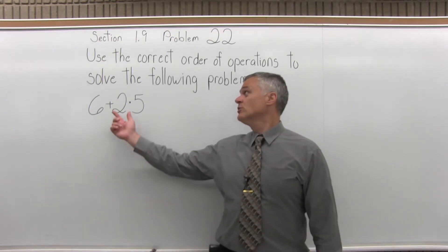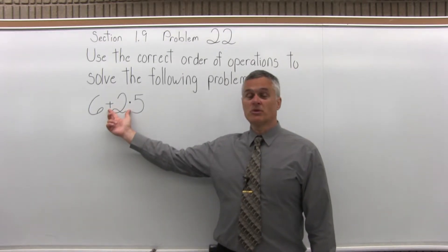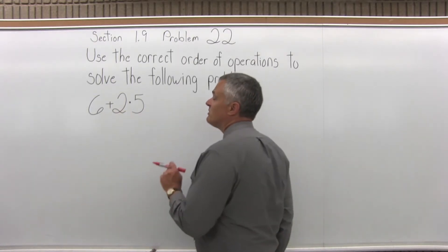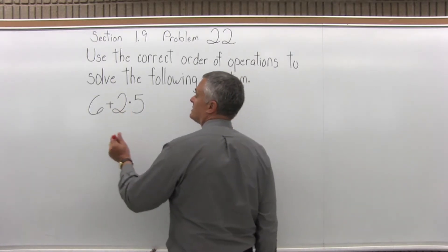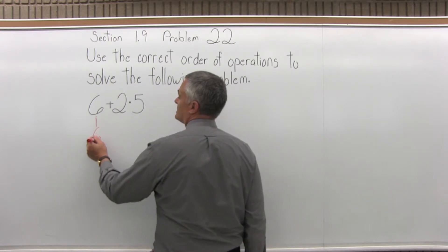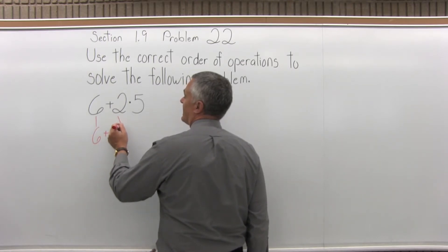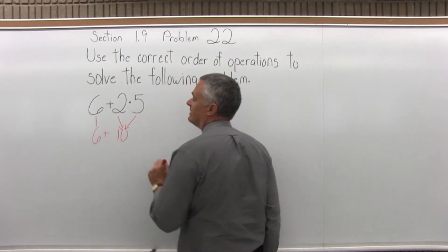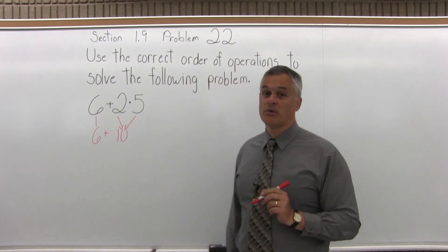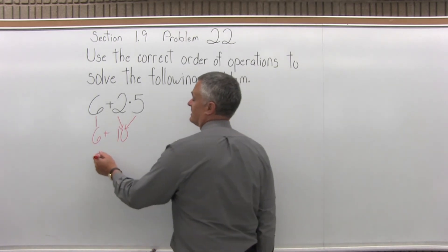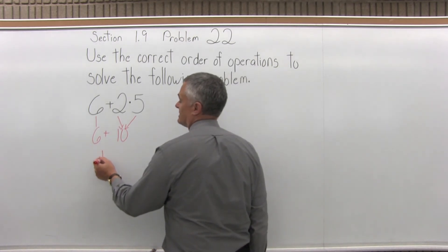There are two operations in this problem: a plus and a times. Multiplication must always be done first. So for now the 6 will just stay on the end and get added to the result of 2 times 5, which is 10. So now the problem is 6 plus 10, and the answer for that is 16.